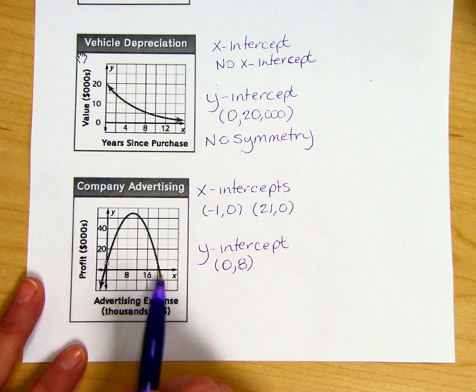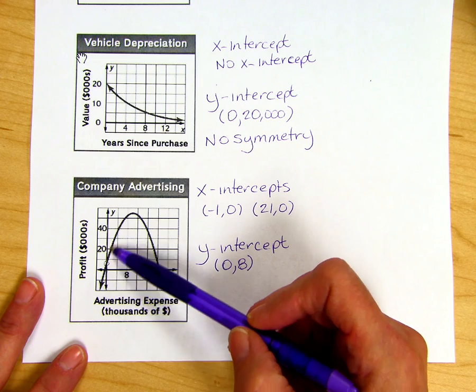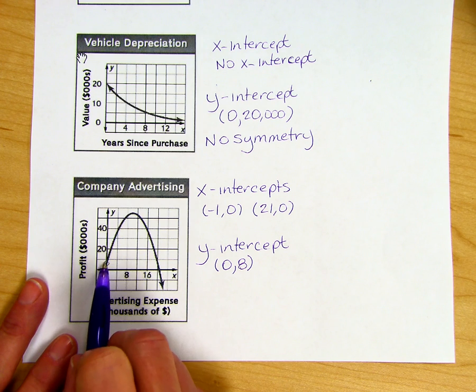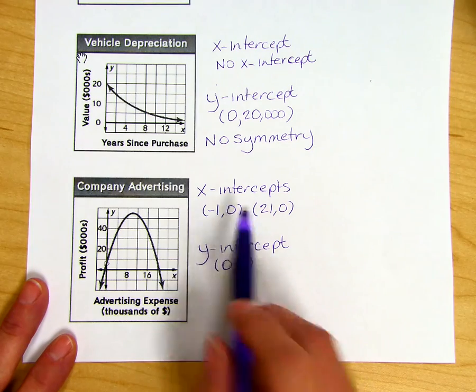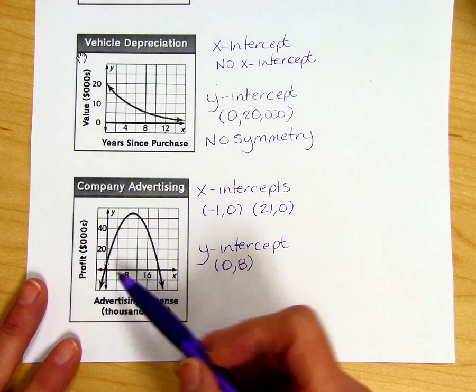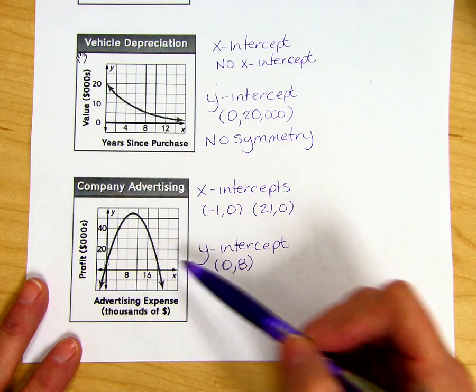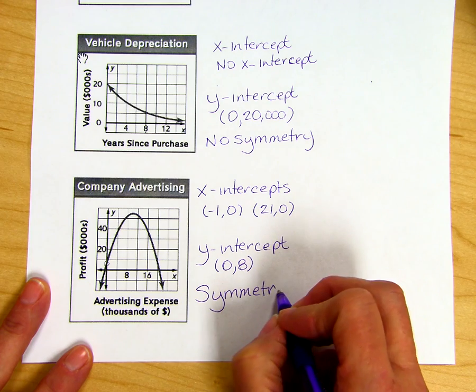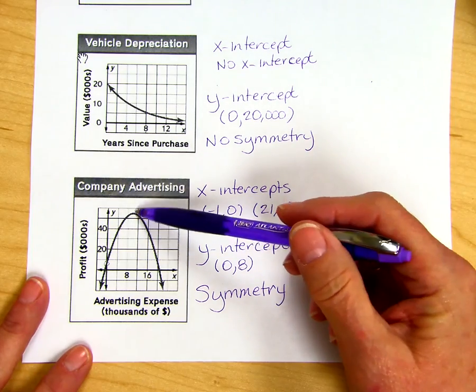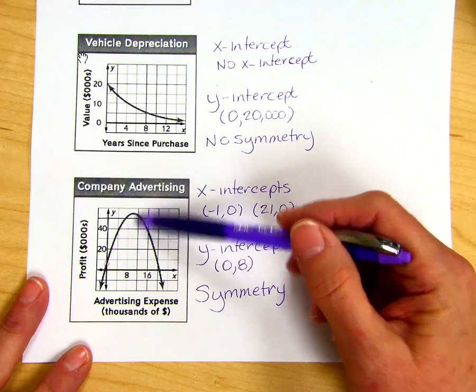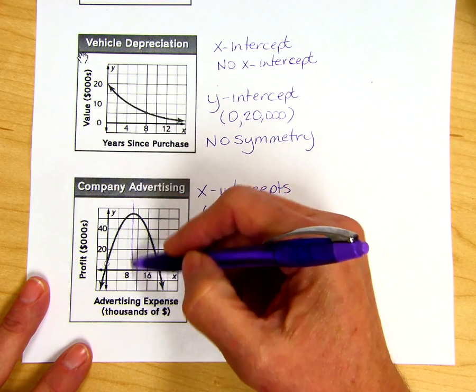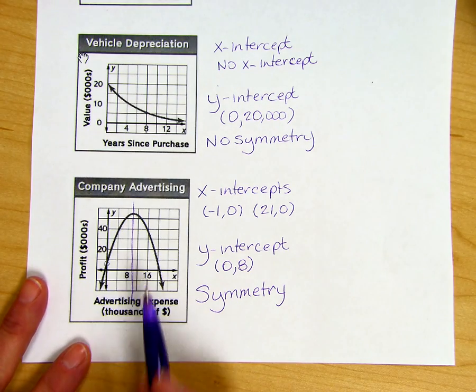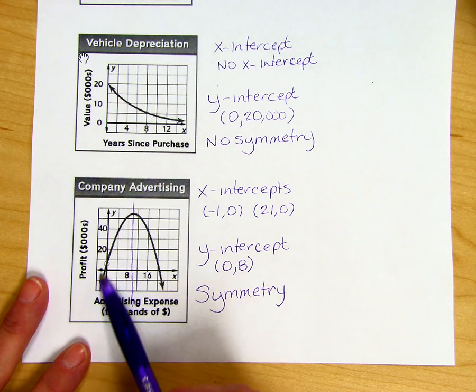So somewhere between this 0 and this 21 is going to be where we're making profit. We can tell that because it curves up. The y-intercept over here at (0, 8) tells us that before we spend any money, we've made $8. And anything to the left of that with the negative intercept is really not applicable in this real world situation. So then we go over to the idea of symmetry. If we took and folded this graph right along this line here, we would have symmetry. This point here being our maximum profit, so this graph would have symmetry because if I folded it, this curve would match this curve.